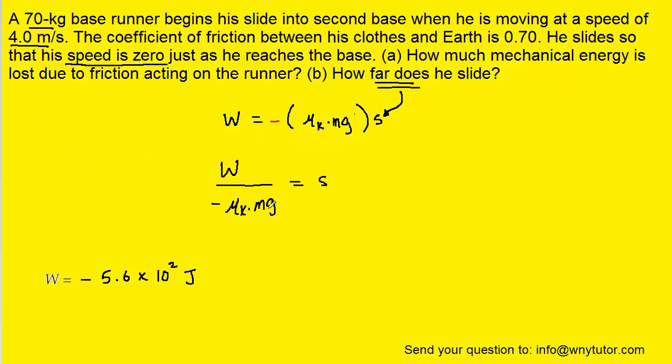And at this point, we can begin to plug in the known values. Mu k was stated in the question to be 0.7. The mass again was stated. G is a gravitational constant, 9.8. And then the work we had calculated earlier. So we'll be plugging that in for w. And when we simplify that on our calculators, we get approximately 1.2 meters for the distance that the runner slides.